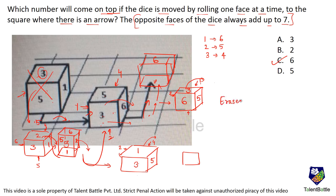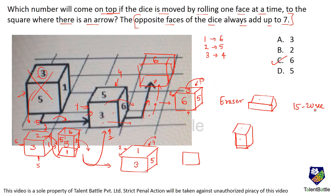A practical tip: in an exam, always keep a square eraser or any cube-shaped object with you. Write the dice numbers on it and physically roll it as per the given sequence. Using this method with a small box, the numbers can be arranged and the dice traced in about 10 to 20 seconds, saving significant time on dice and cube questions.